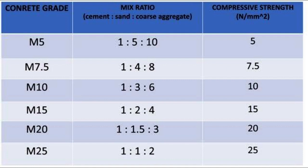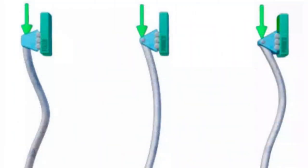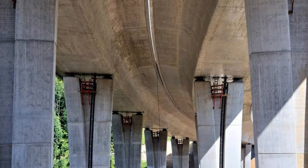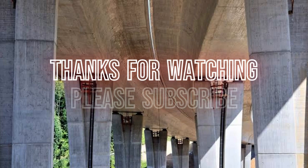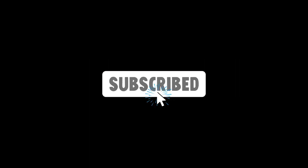For M25: 1:1:2. For higher grades, we design the mix as per IS10262-2009. Question 11: What do you understand by buckling? Buckling is characterized by a sudden sideways failure of a structural member subjected to high compressive stress; at the point of failure, the stress is less than the ultimate compressive stress that the material is capable of withstanding.